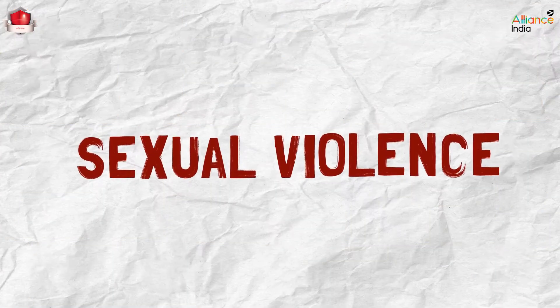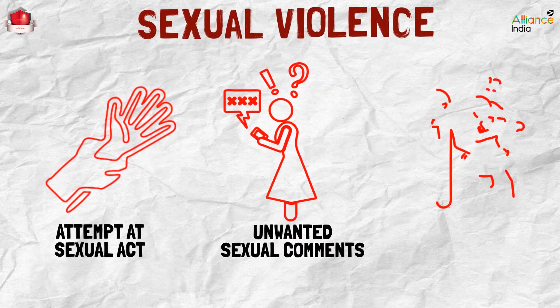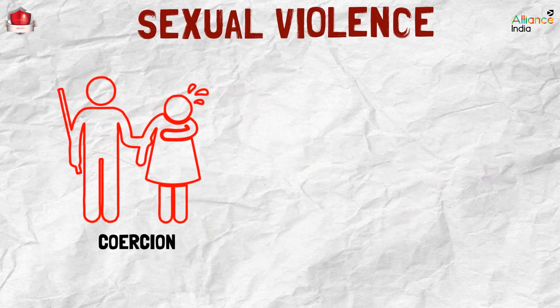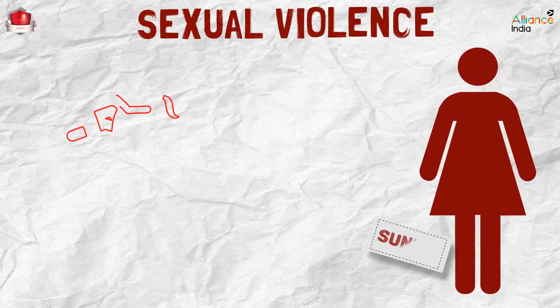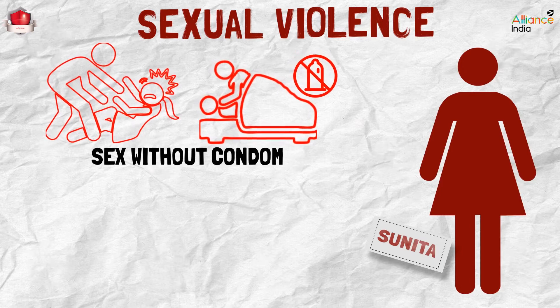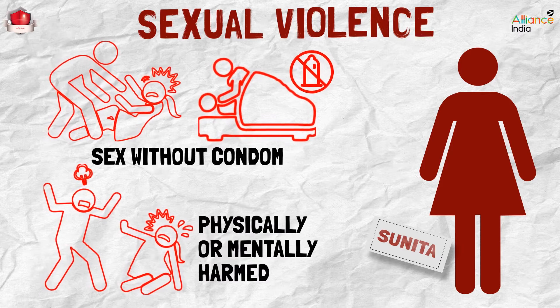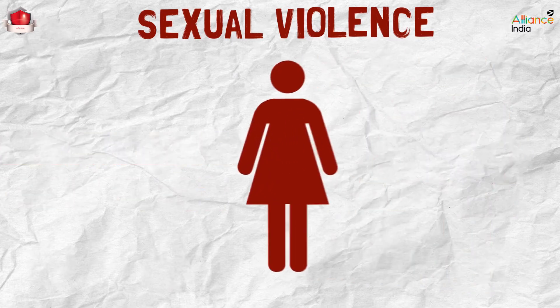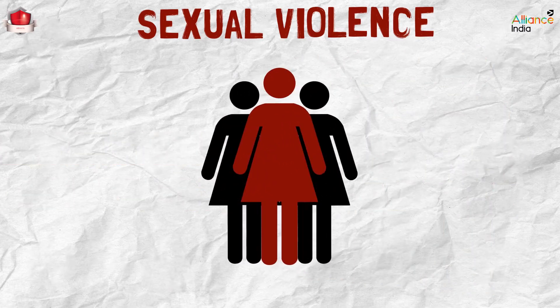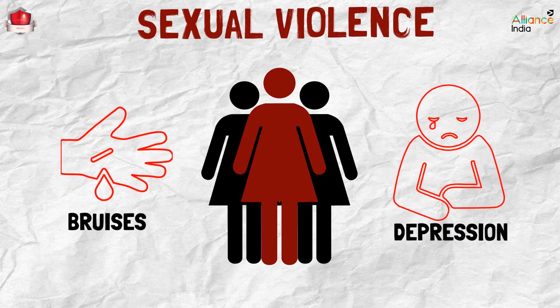The second form of violence is sexual violence, defined as any attempt at a sexual act, unwanted sexual comments or advances against a person using coercion, by any person regardless of their relationship to the victim. Meet Sunita — her client forces her to have sex without a condom, and is sometimes physically aggressive towards her, harming her physically and mentally. All these, including non-consensual sex, are acts of sexual violence. Like Sunita, if someone is facing sexual violence, they may have bruises on their body or face, and may also be silent and depressed.